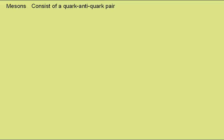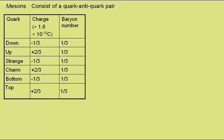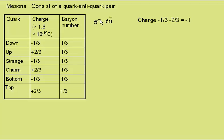Now to look at mesons. Mesons consist of a quark-anti-quark pair. Here again is the table of charge and baryon number for quarks for us to refer to. First, the pi-minus, one of the pions. This consists of a down-anti-up pair, and so the charge is minus a third for the down, minus two thirds for the anti-up, giving an overall charge of minus one, hence the superscript of a minus sign. Baryon number: plus one third for the down, minus one third for the anti-up, giving a baryon number of zero — the same as all mesons.